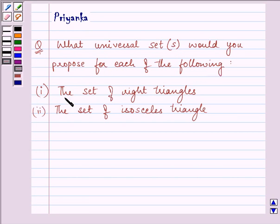Now the first part is the set of right triangles, the second part is the set of isosceles triangles. So for each of the following we need to tell the universal sets.